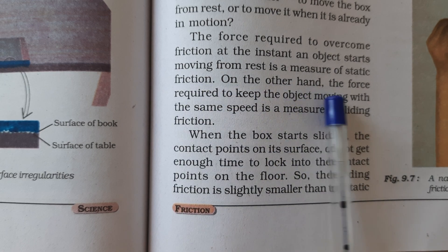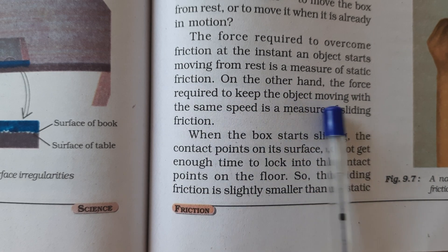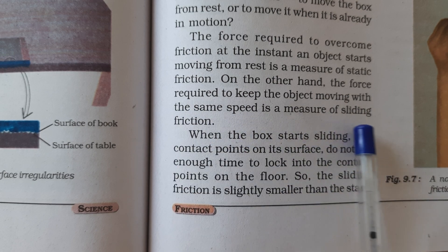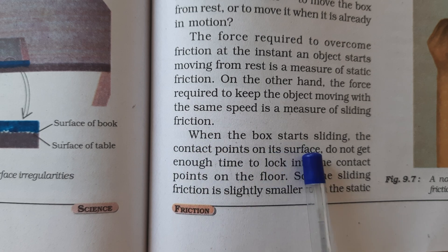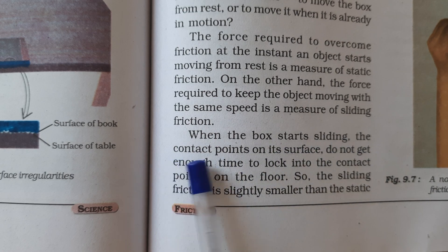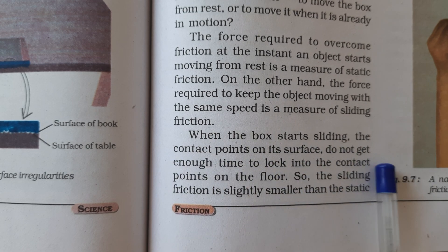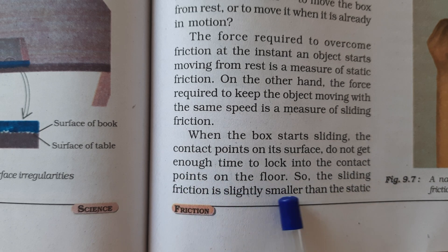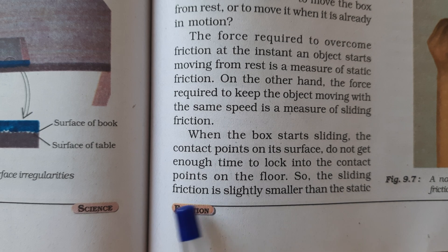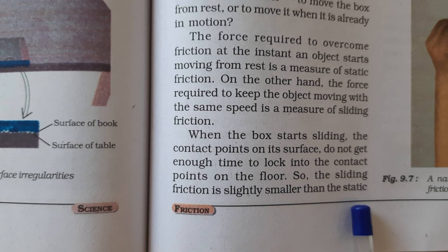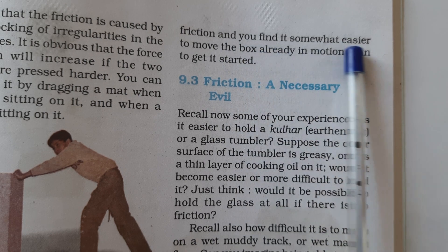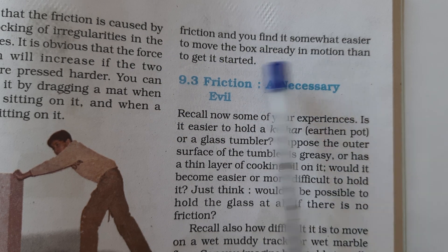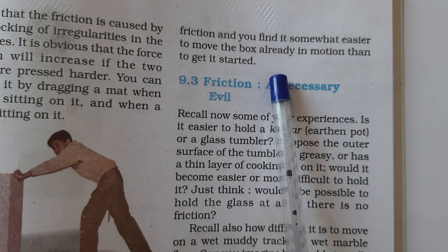On the other hand, the force required to keep the object moving with the same speed is a measure of sliding friction. When the box starts sliding, the contact points on its surface do not get enough time to lock into the contact points on the floor. So sliding friction is slightly smaller than static friction, and you find it somewhat easier to move the box already in motion than to get it started.